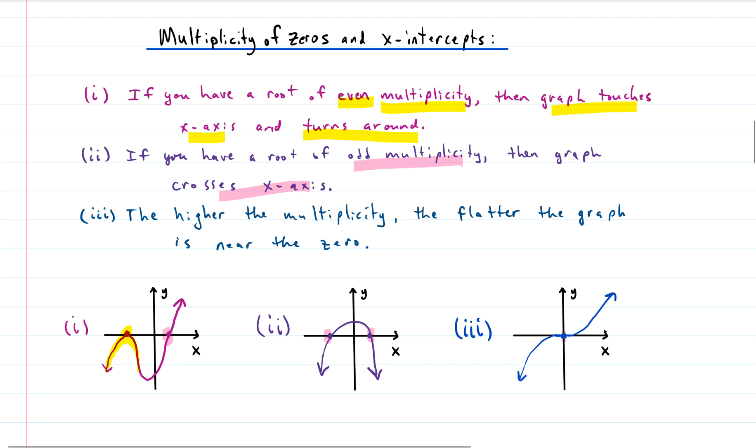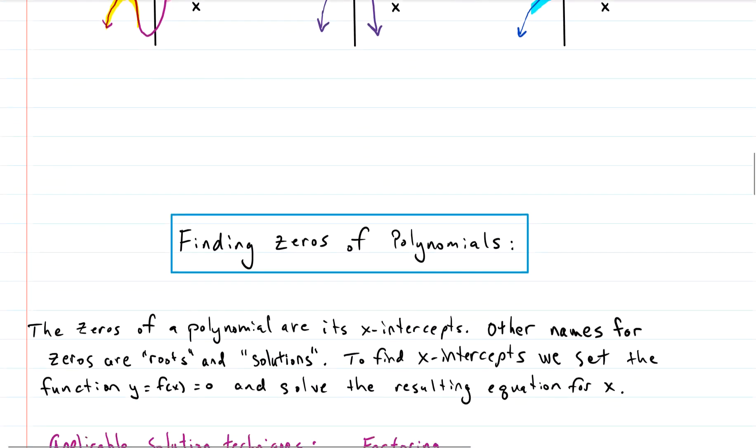And the final comment, the higher the multiplicity, the flatter the graph is near the zero. So you can see here, the graph comes up, is really flat, then goes up. So the higher the multiplicity, the flatter it is. Not too bad, right?